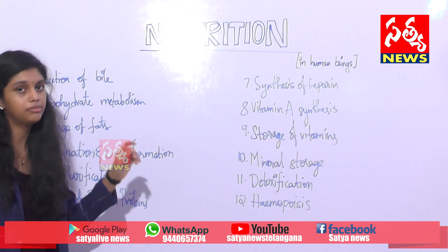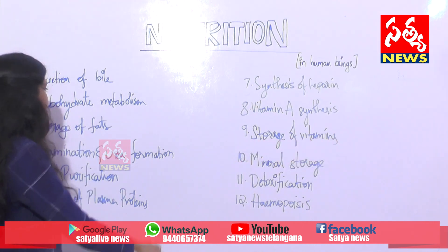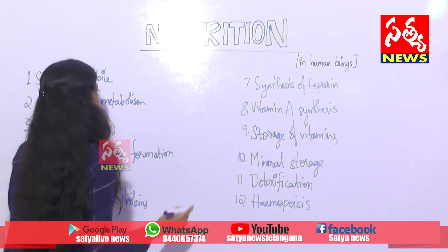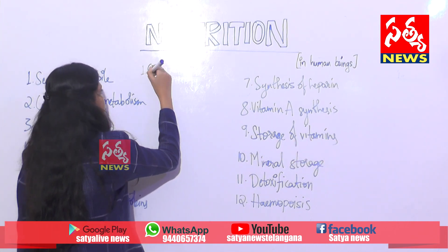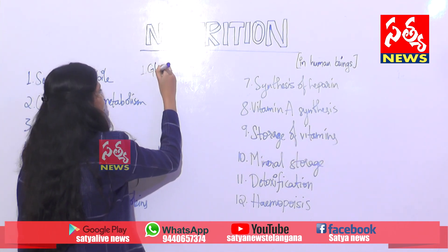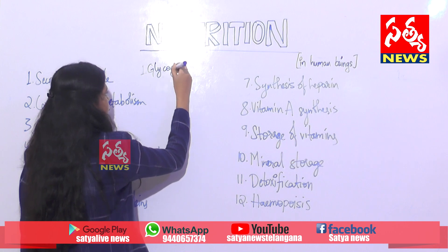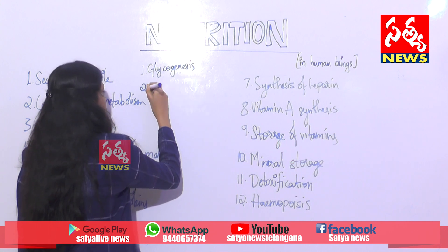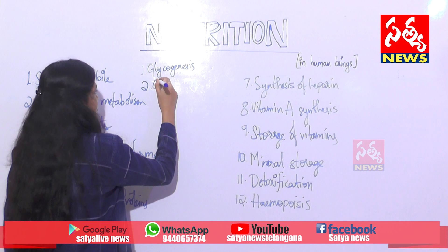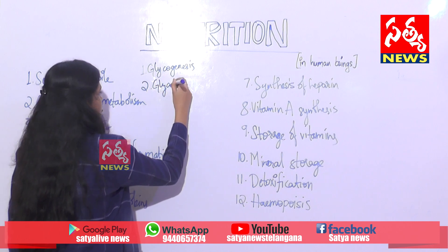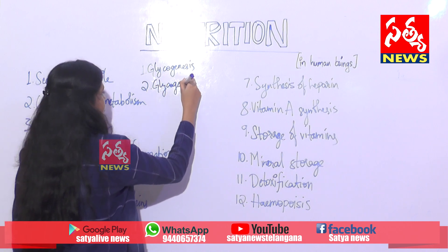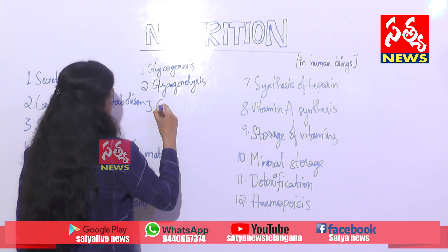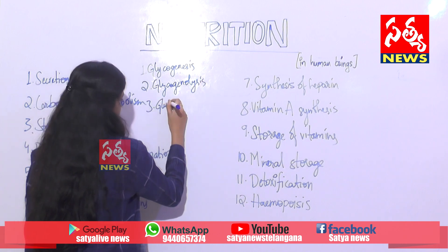Number two: carbohydrate metabolism. The liver is the main unit for carbohydrate metabolism. This carbohydrate metabolism contains nearly four steps: number one glycogenesis, number two glycogenolysis, number three gluconeogenesis.